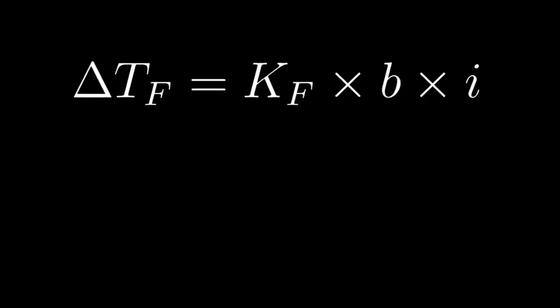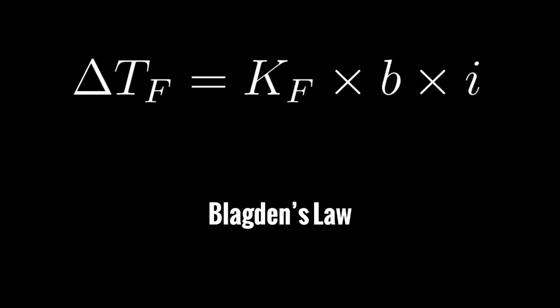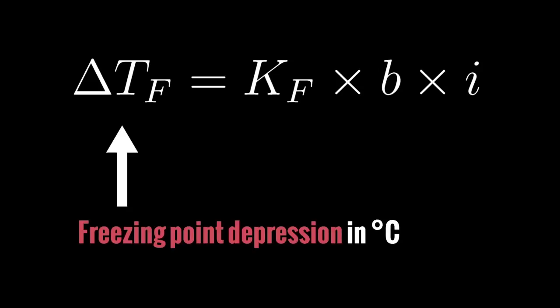And when we pretend that all solutions are ideal solutions, the calculation becomes a lot easier. It becomes this. This is what's called Blagden's law, and it has three main things that you have to multiply to calculate the freezing point depression. So this is the freezing point depression in degrees Celsius. This is just the amount of degrees Celsius that the freezing point drops from normal once you add the solute.